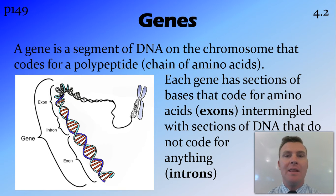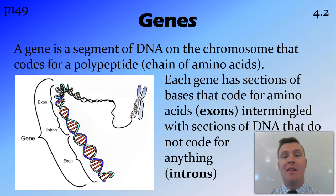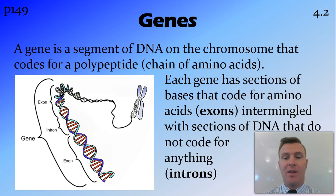However, within that gene there are different sections. Some of these sections code for amino acids directly and they're called exons, while other parts of that gene — sections in the chain — don't actually code for any amino acids. These are introns, and they're basically just extra DNA that's there. We're not entirely sure why it's there or whether it serves any purpose at this stage.